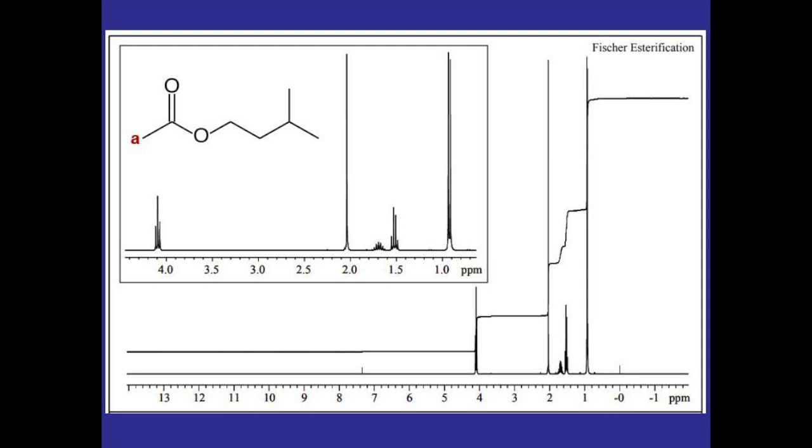Now we can just move down the molecule and label the rest of the hydrogens. These two here would be equivalent so we can label both of those as B, and these two are equivalent as well so we can label those as C.